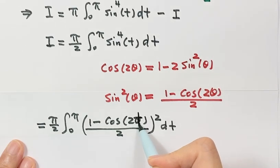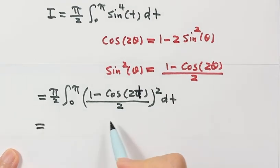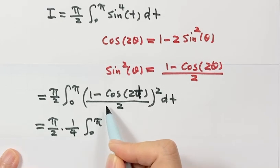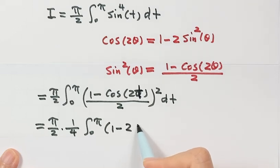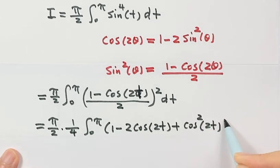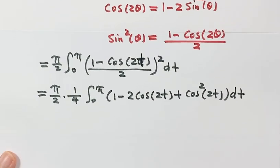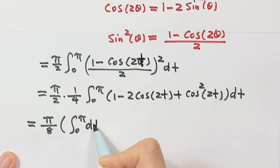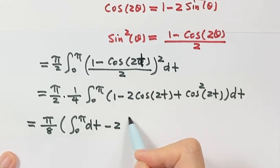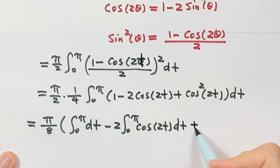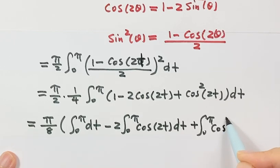Taking out the one-half squared gives us one-fourth. Expanding the inside: that's 1 minus 2 cosine 2t plus cosine squared 2t. Next, we separate this into three integrals: the first is just dt, the second has negative 2 outside and cosine 2t dt inside, and the third is cosine squared 2t dt.